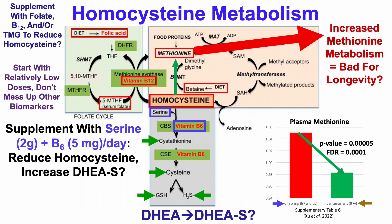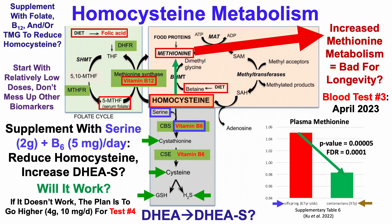So with that in mind, the goal until the next test is to supplement with serine plus vitamin B6 — two grams of serine per day and five milligrams of vitamin B6 per day. I think that may be able to reduce homocysteine and potentially increase DHEA sulfate. Note that these are relatively low doses because I only want to impact homocysteine and/or DHEA sulfate without messing up anything else. My next blood test will be in a few weeks, sometime in mid to late April. If it doesn't work, the plan is to potentially double the serine and B6 intake for test number four in 2023.